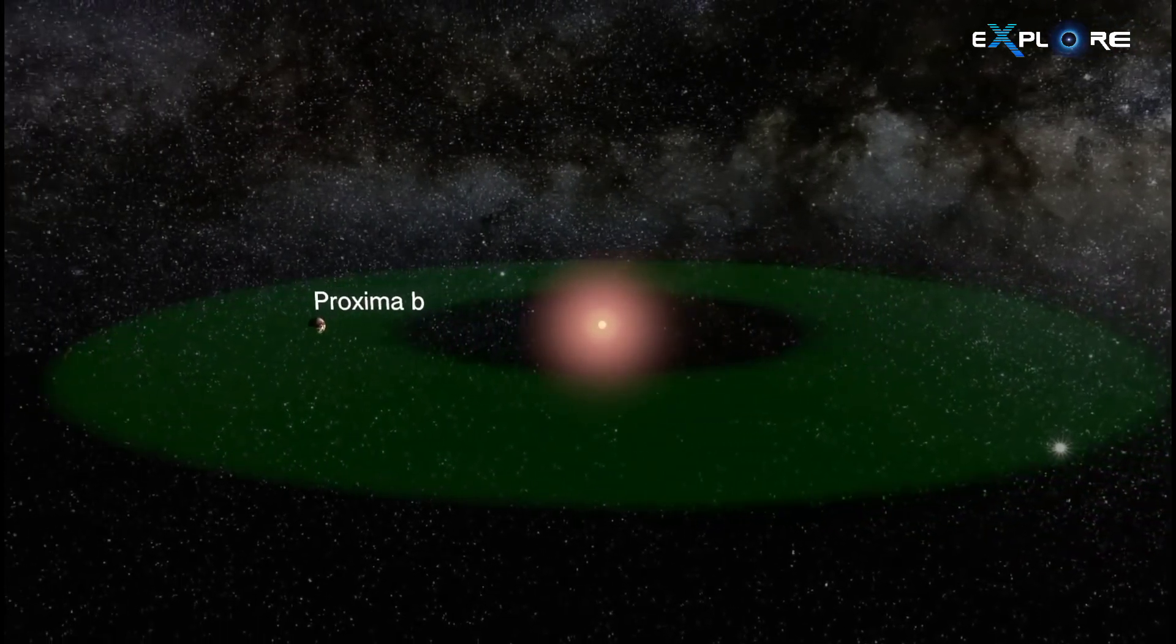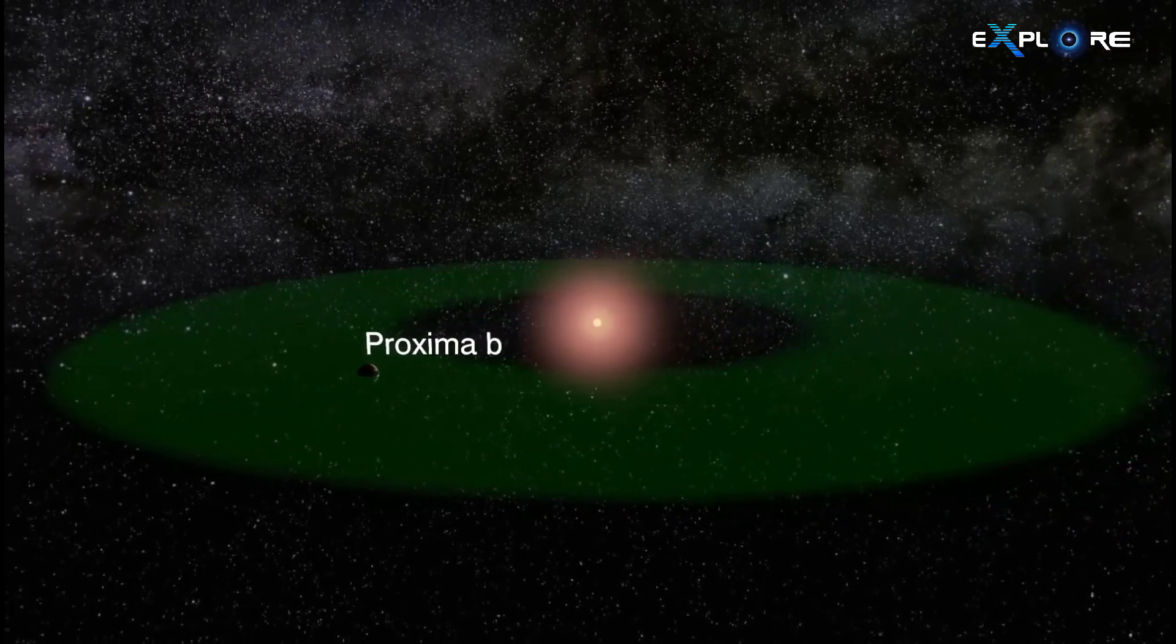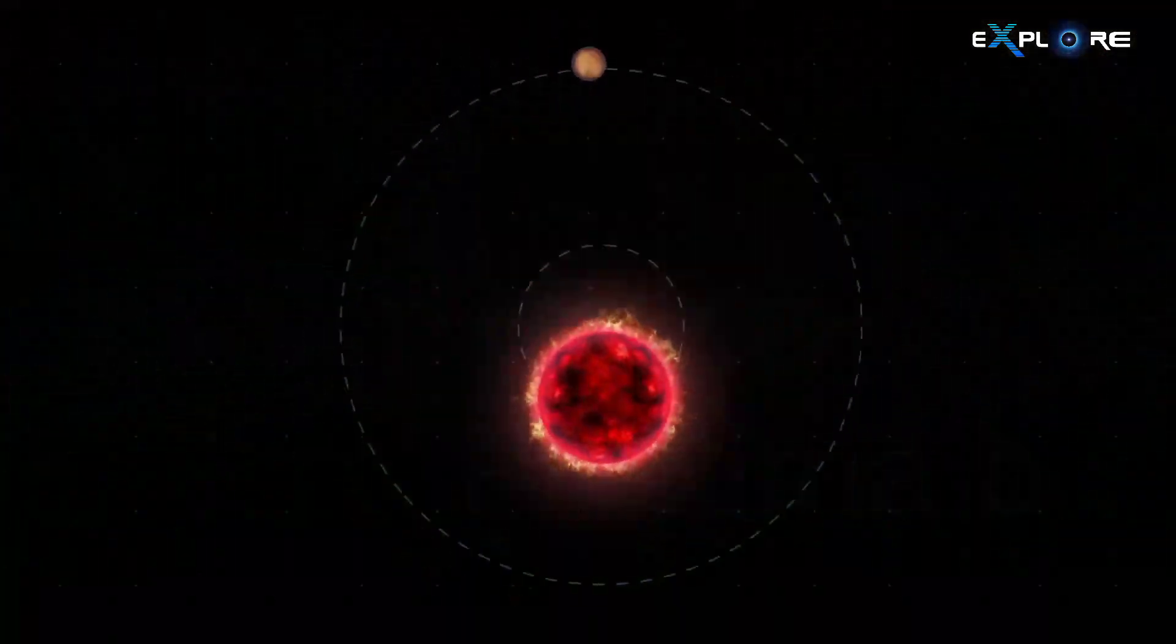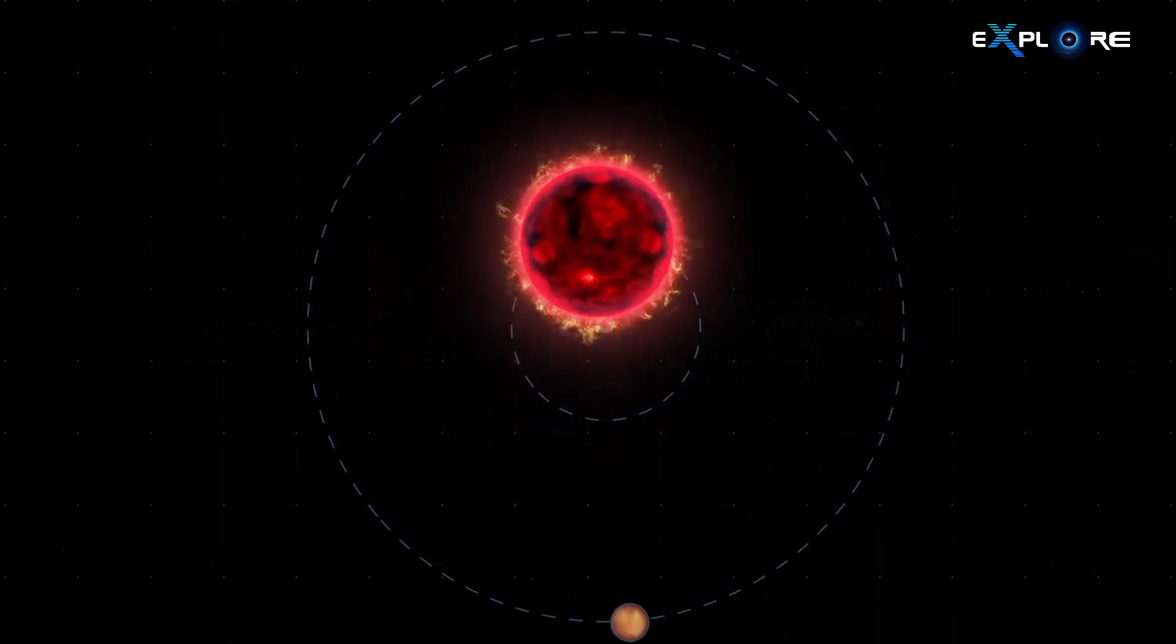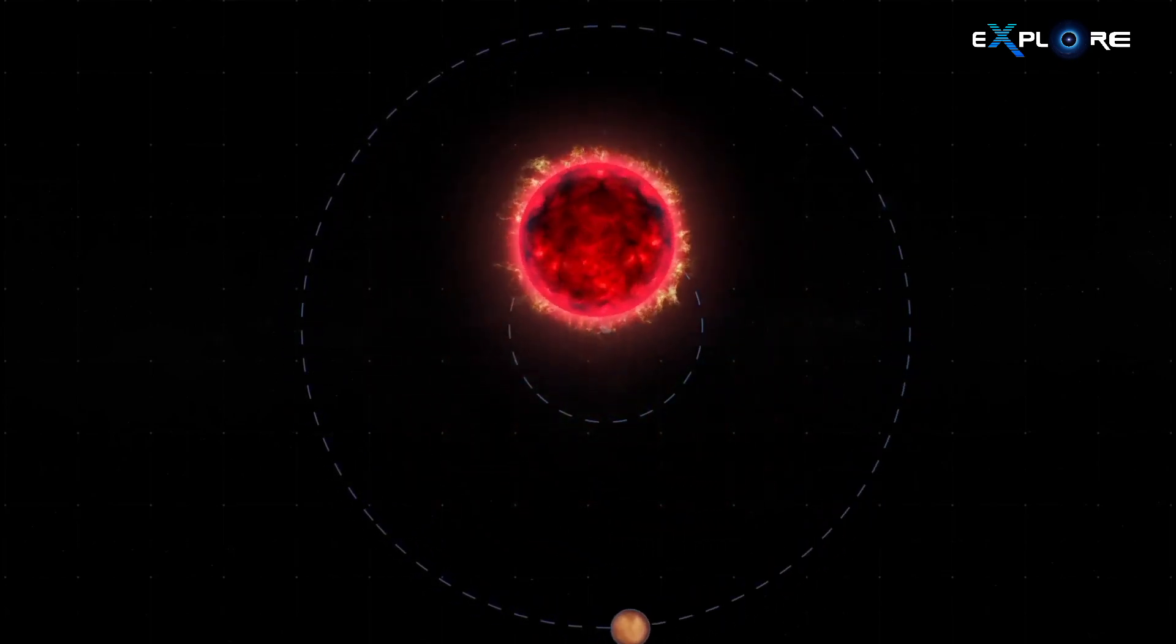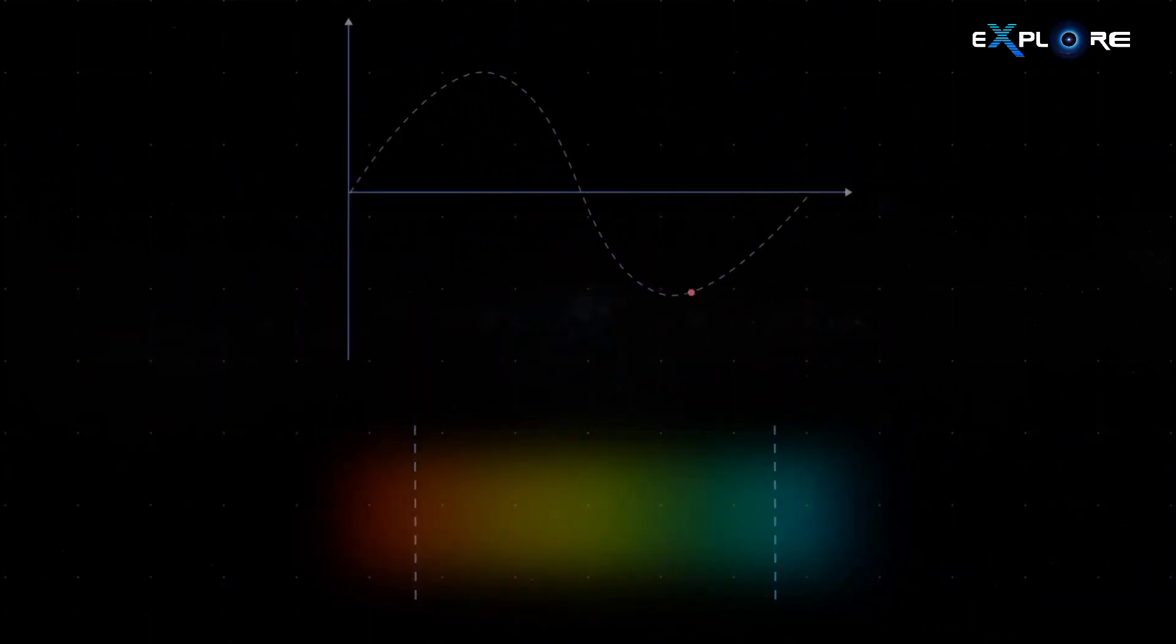We found Proxima B using a technique called the radial velocity method. It's like finding a hidden treasure, because when planets go around stars, they make the stars wobble a bit. We carefully watch the stars' light to detect these wobbles. It's exciting when we find a planet this way.